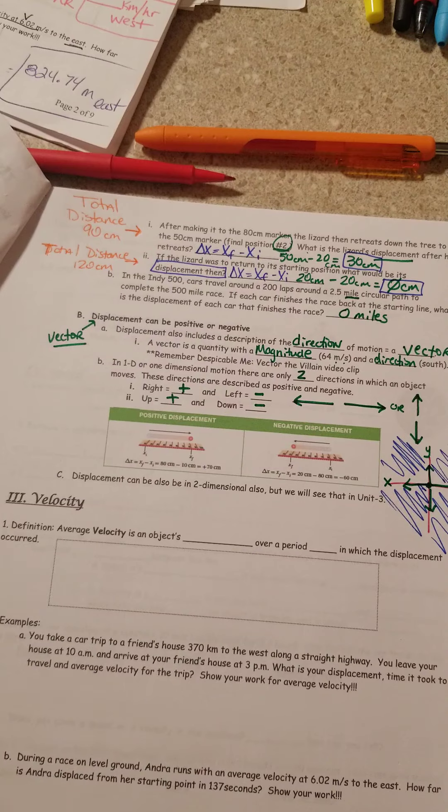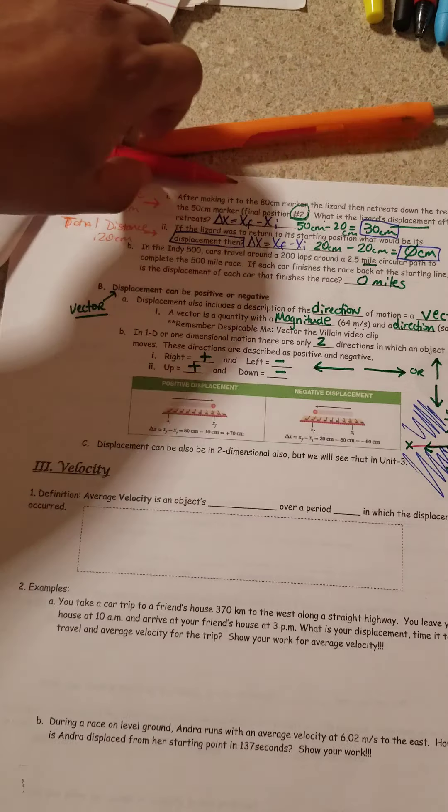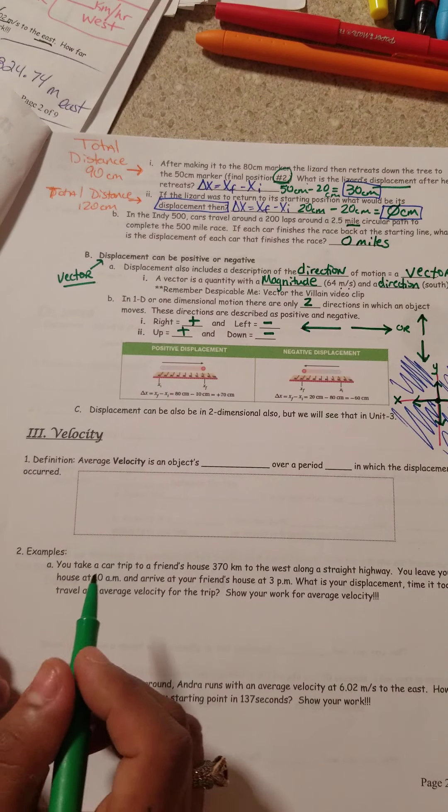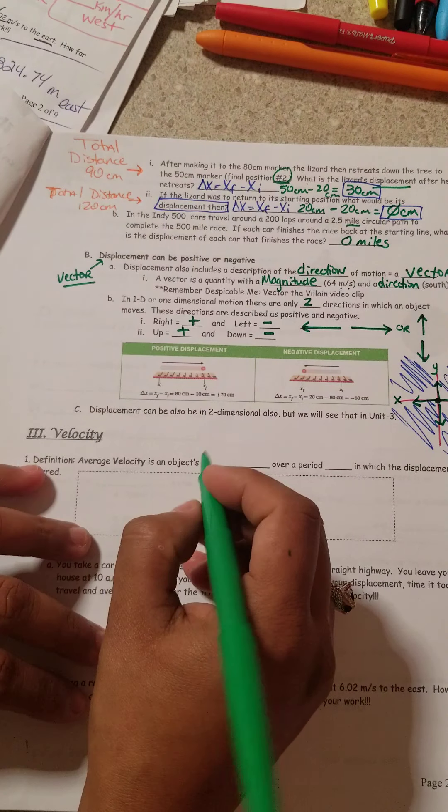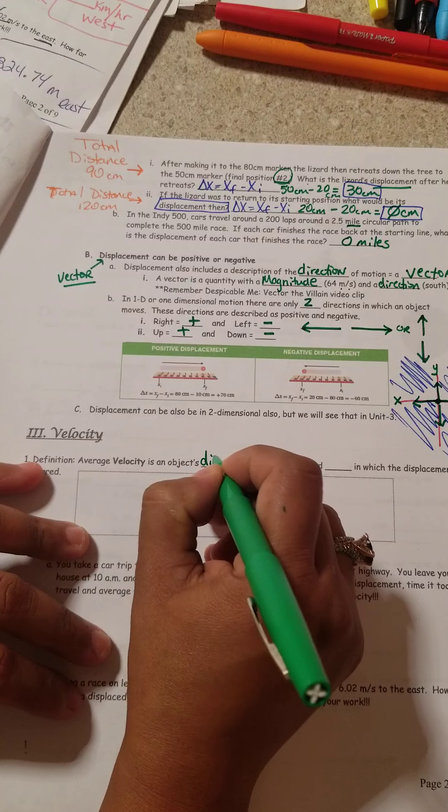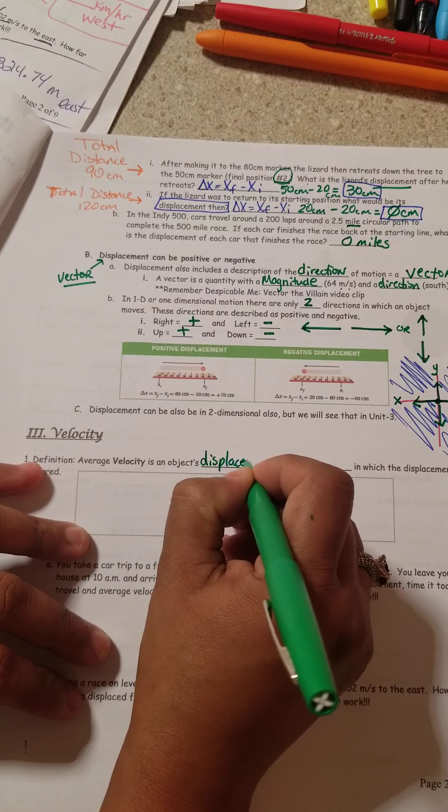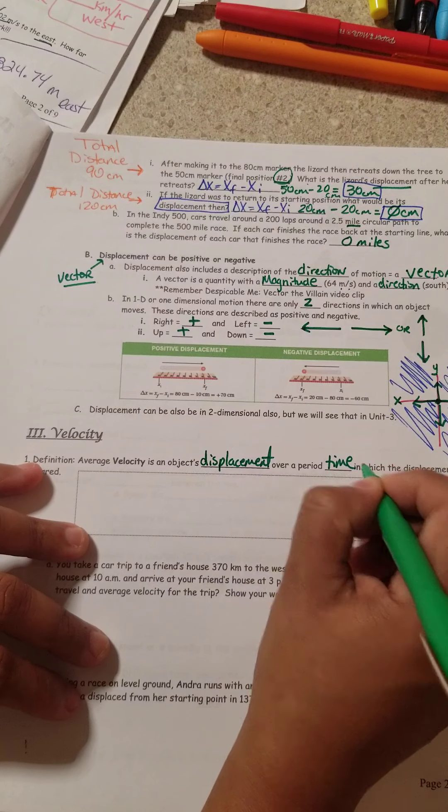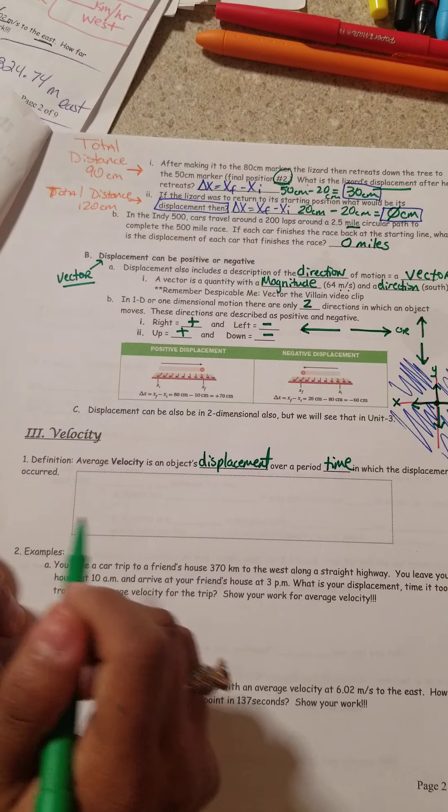Let's go to the next word, velocity. The next vocabulary word, the next equation. It says here, the definition for average velocity is an object's displacement over a period of time in which the displacement occurs.